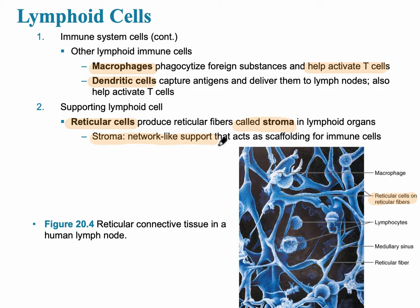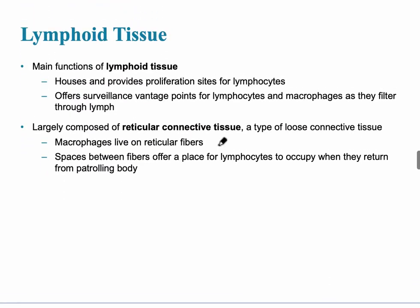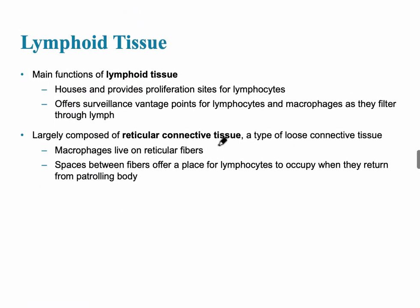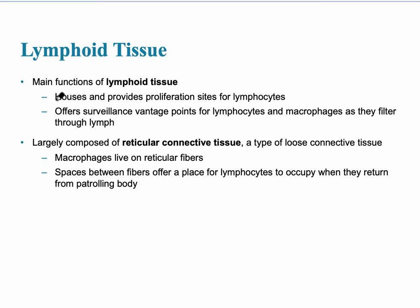Lymphoid tissue's job is first to house and provide proliferation and growth for lymphocytes. It also offers a surveillance or vantage point, where lymphocytes and macrophages look around at the lymph nodes and other lymphoid tissue so that they can attack. There is also reticular connective tissue, a type of loose connective tissue, and macrophages specifically live on that reticular tissue.